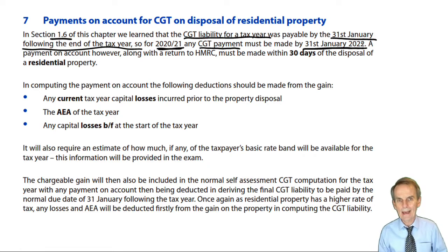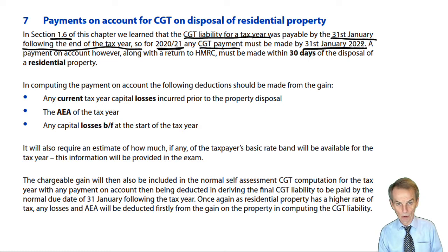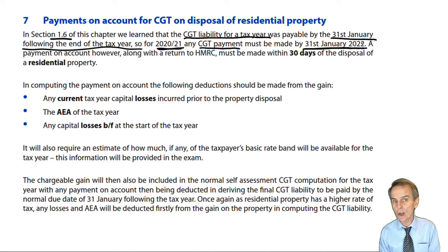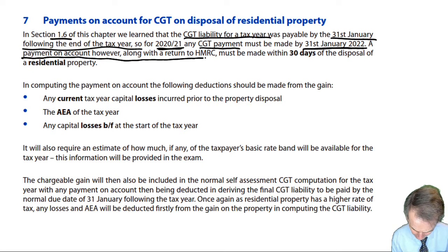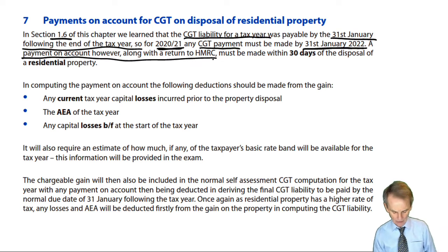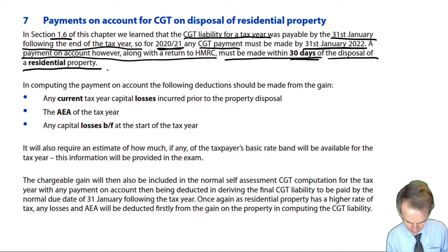What now happens is if we dispose of a residential property that doesn't attract private residence relief and we make a capital gain, then the CGT due on a disposal on the 1st of May 2020 would be due within 30 days of that disposal date. A payment on account, along with a return to HMRC, must be made within 30 days of the disposal of a residential property.